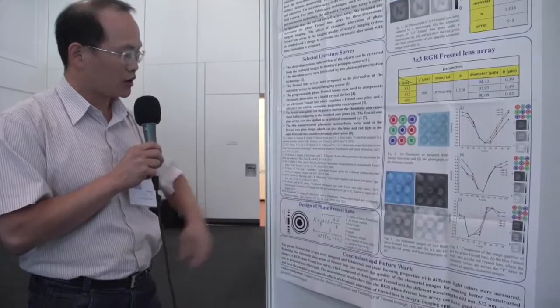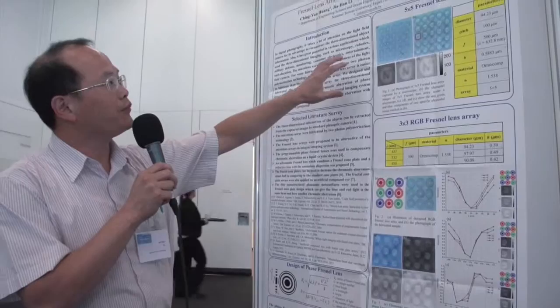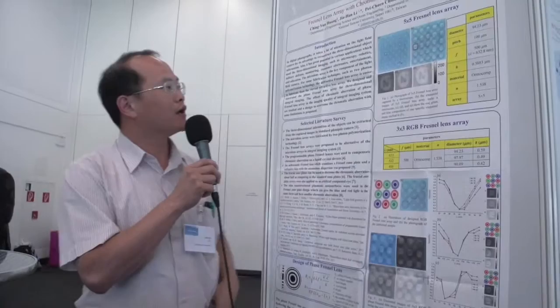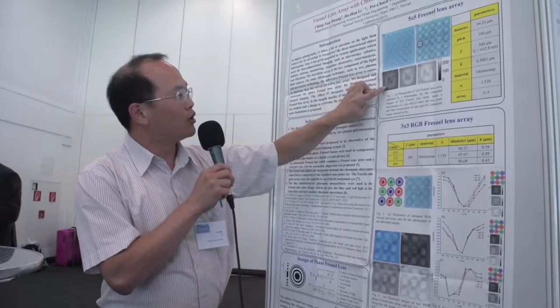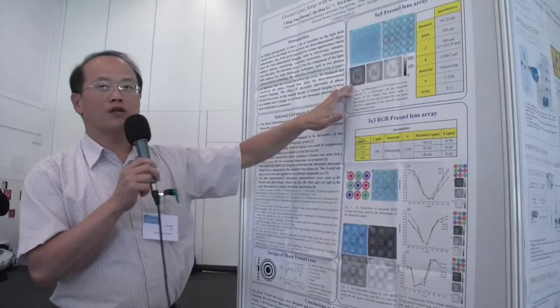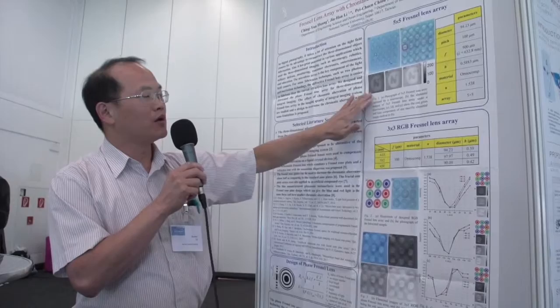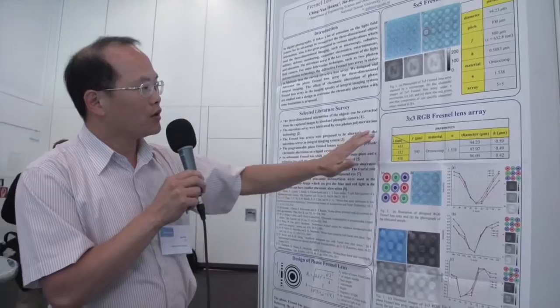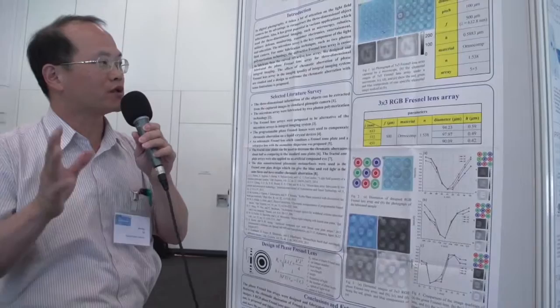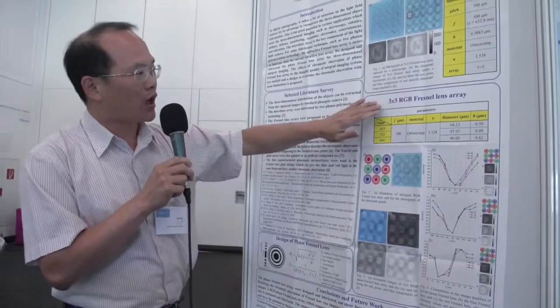We use two-photon polymerization technology to fabricate a 5×5 Fresnel lens array. This lens is focused on red light. Here we show images for the red color, the green color, and the blue color. You can see that the red color has the sharpest image, because this lens was designed for the red wavelength. You can also see that different colors have different sharpness, which means the lens has chromatic aberration.